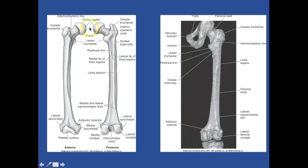You have your fovea capitis with the head of your femur and the neck of your femur. You have the greater trochanter with your intertrochanteric crest. Here's your lesser trochanter, your gluteal tuberosity, and you have your linea aspera coming down. You have your lateral epicondyle, lateral condyle, intercondylar notch, medial condyle, medial epicondyle, and the adductor tubercle. So we have the patellar surface and the lateral epicondyle. I want you to know your greater trochanter, your intertrochanteric line with your lesser trochanter.